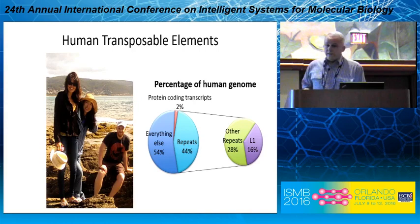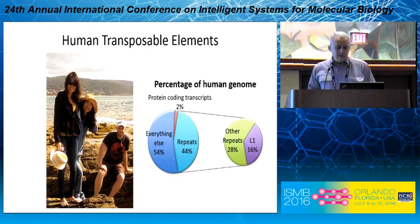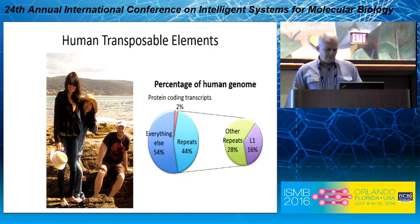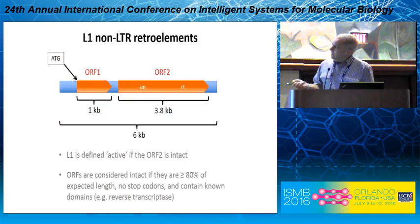We don't really know what governs this process, and we don't even really know how widespread this is across the tree of life. In humans, around 44% of the genome is repeats, and of those, 16% of the total genome is L1s and L1 fragments. So in mammals and in humans, this is a pretty significant part of the genome, and there's a lot of literature on these.